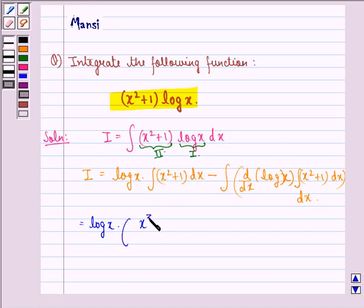So that will be x cube by 3 plus x minus integral of d by dx of log x is 1 by x. Again integral of x square plus 1 dx we have seen here was x cube by 3 plus x into dx.